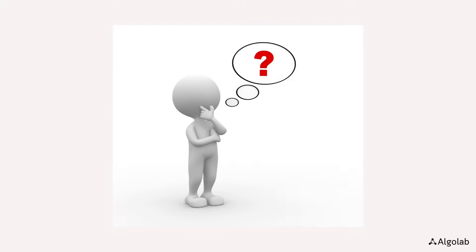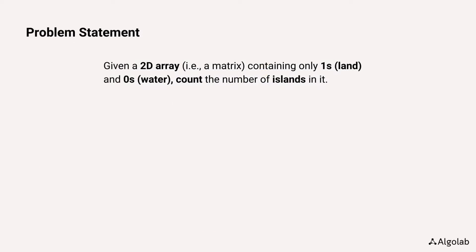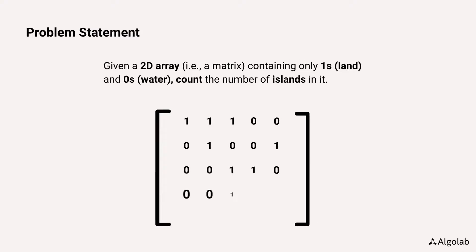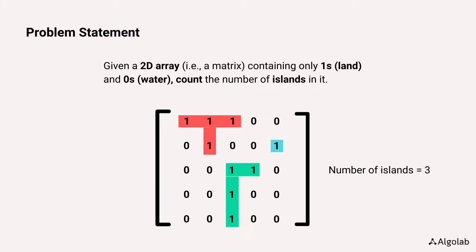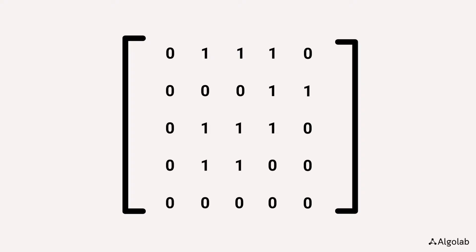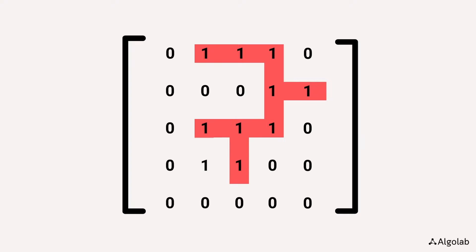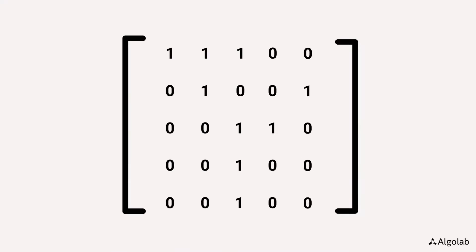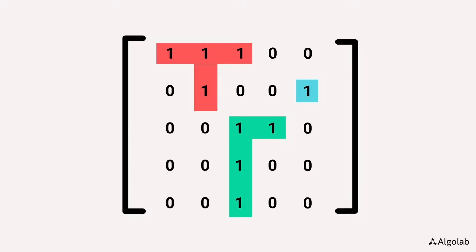Let's jump onto our first problem. Given a 2D array containing only ones representing land and zeros representing water, count the number of islands. An island is a connected set of ones surrounded by either an edge or zeros. Each cell is considered connected to other cells horizontally or vertically, not diagonally. For example, in one matrix all the ones are connected together forming one island, while in another matrix there are three such islands.